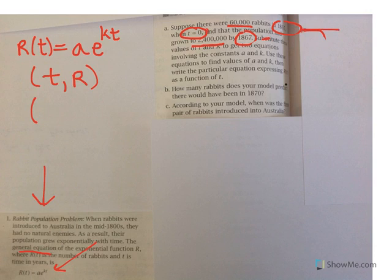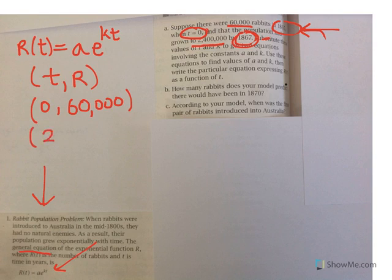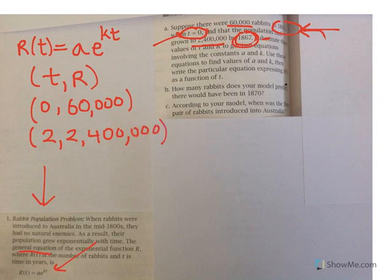For 1865, we're going to use 0 for t and there were 60,000 rabbits. For 1867, we're going to use 2 for t because that's 2 years after 1865, so 0 plus 2 is 2, and at that time there were 2,400,000 rabbits. So we have two ordered pairs that we know from the given information.